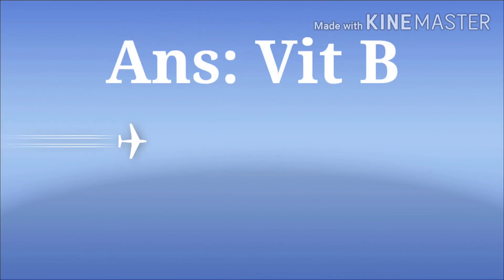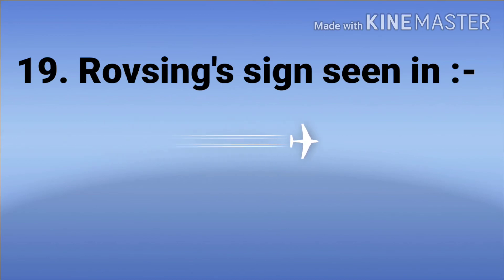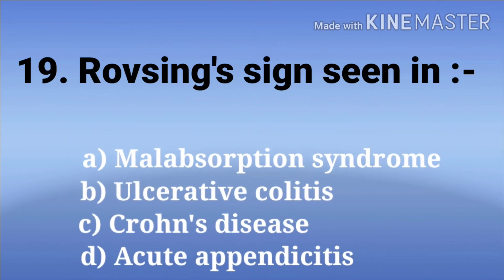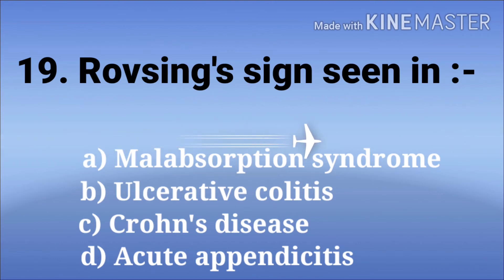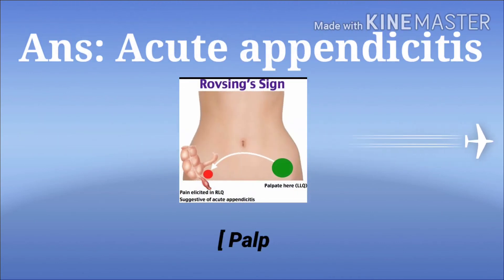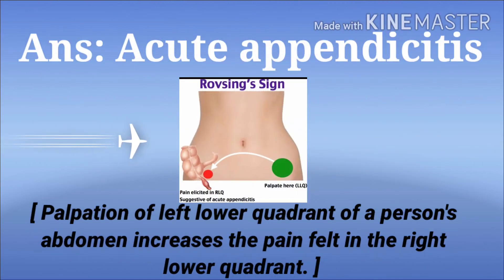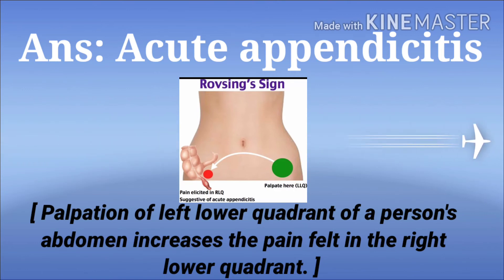The Rovsing's sign. The options are malabsorption syndrome, ulcerative colitis, Crohn's disease, and acute appendicitis. The answer is acute appendicitis. In the case of acute appendicitis, palpation of the left lower quadrant of the abdomen increases the pain felt in the right lower quadrant — that is Rovsing's sign.